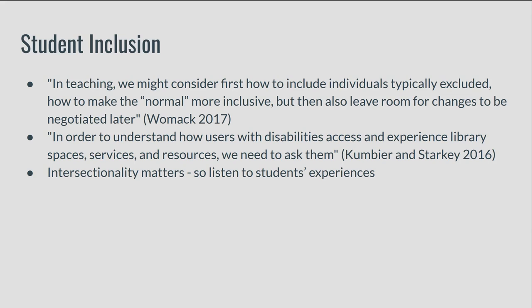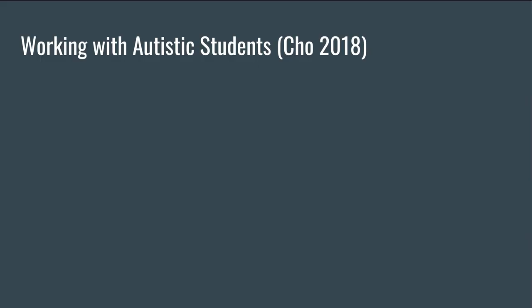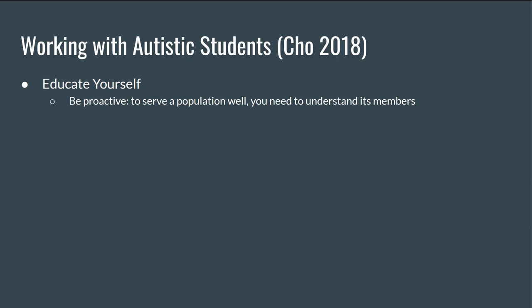Some wonderful librarians have written about their conversations with students on these topics, and I have compiled some of their tips as a starting point. I've included tips from James Cho, who works with autistic students through the Bridges to Adelphi program at Adelphi University. His first tip is to educate yourself and be proactive: to serve a population well, you need to understand its members, so gain an understanding of autism spectrum disorder and what life with ASD entails. Read personal accounts, speak with folks in your institutional disability office, and connect with students personally when you can.